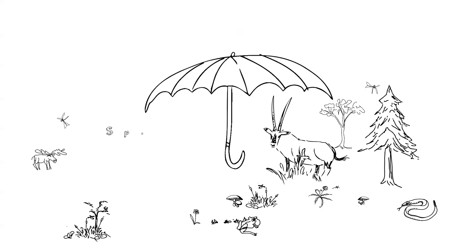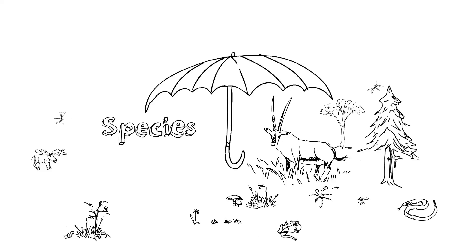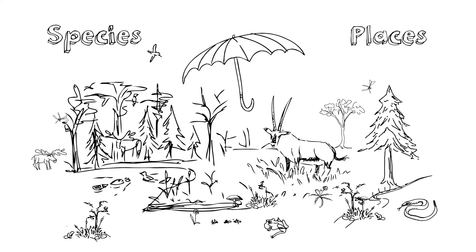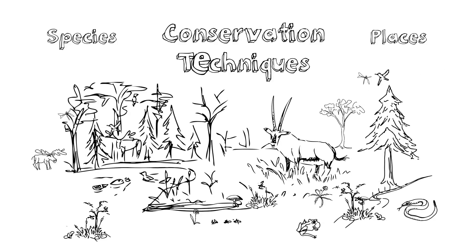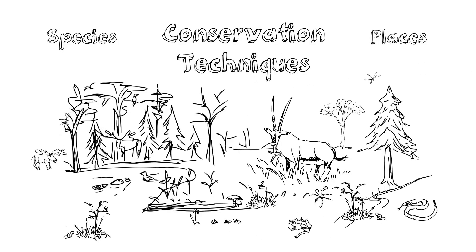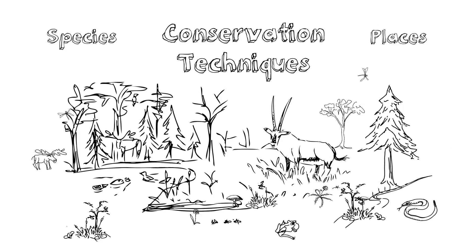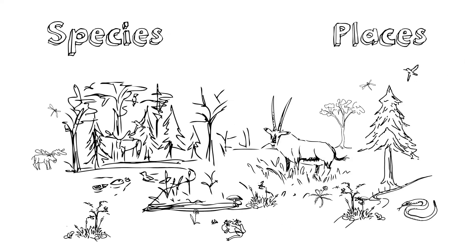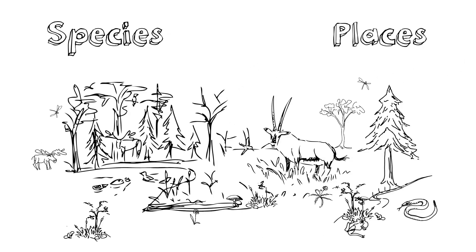One is protecting species, and the other is protecting places in which those species live. Different kinds of conservation techniques can be applied to these two different approaches, but in a lot of cases very similar methods can also accomplish the goals. The concepts of saving species and saving places weave together just as much as they can be treated separately.